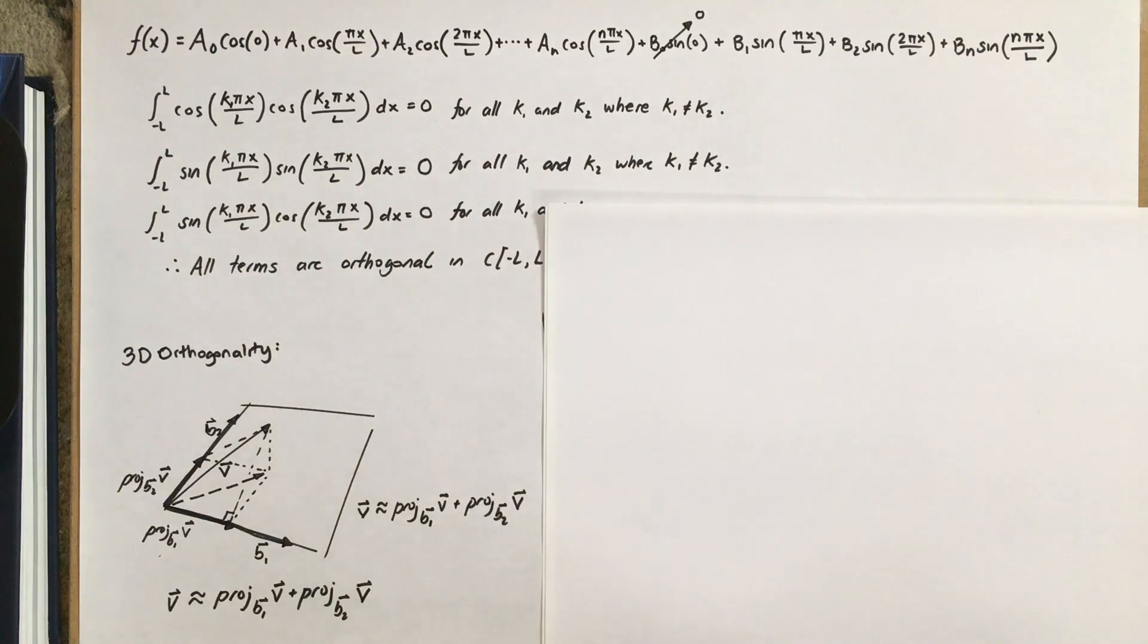With that visual in mind, we can kind of bring up the dimensions such that the 2D plane becomes a 2n plus 1 dimensional thing, and the 3D space is infinite dimensional space, or as we call it, the vector space of all functions on negative L to L. But, it may seem reasonable that the projections should still work in other dimensions, even if they're infinite. And indeed, they do.